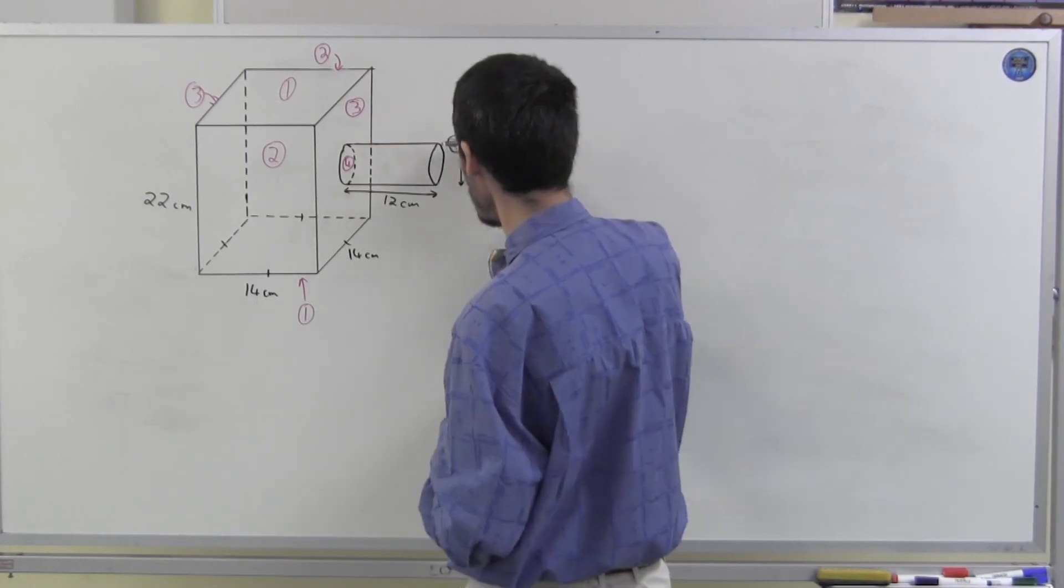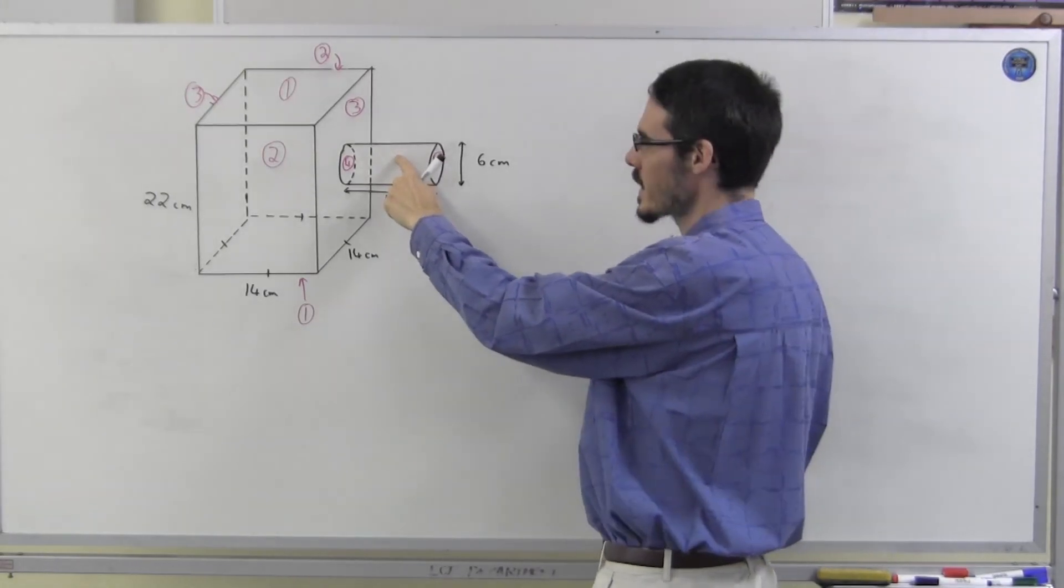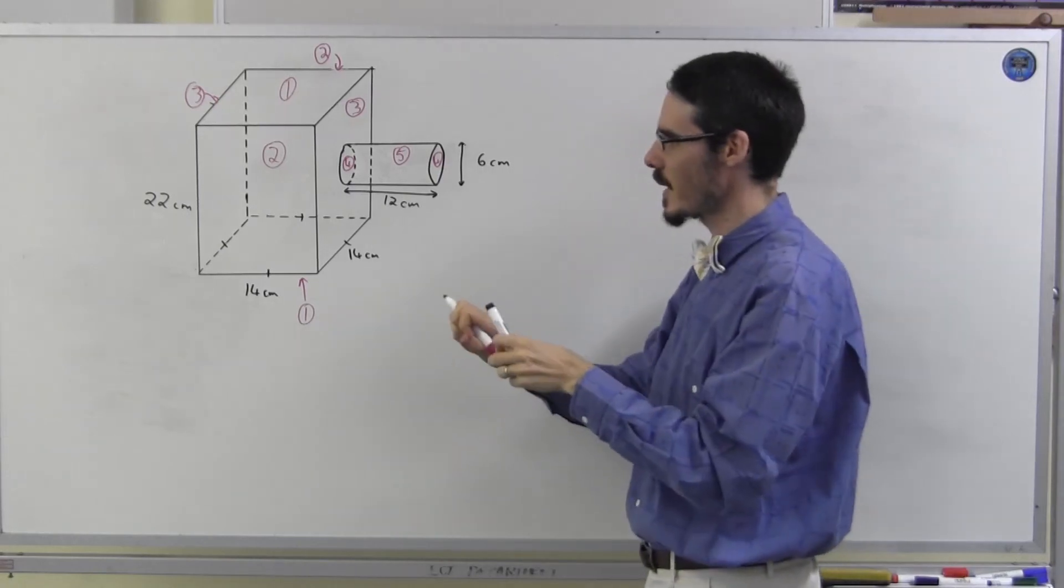Circle is number four. And then there's the curved surface of the cylinder for me to work out as well.